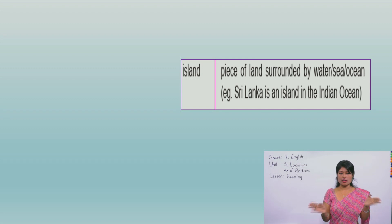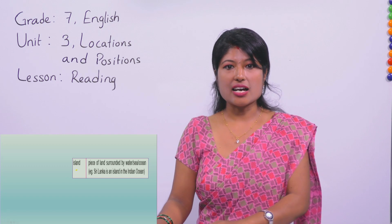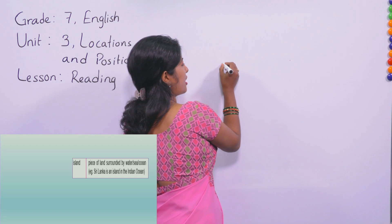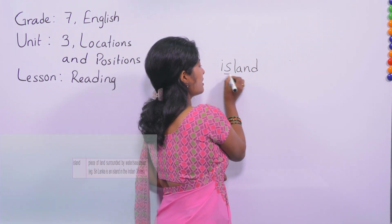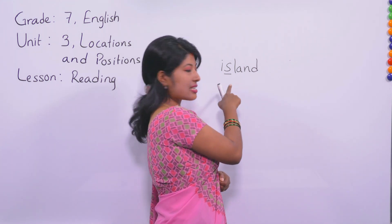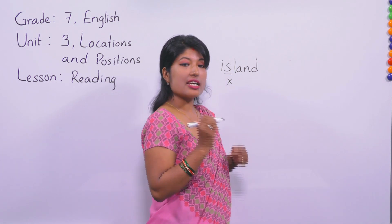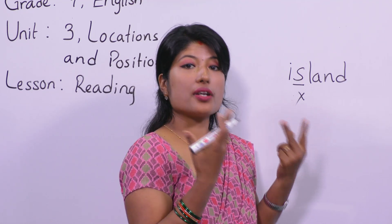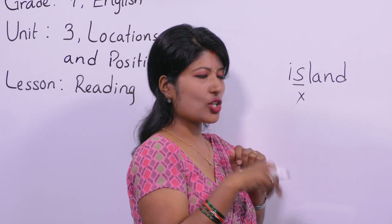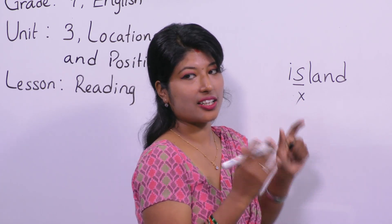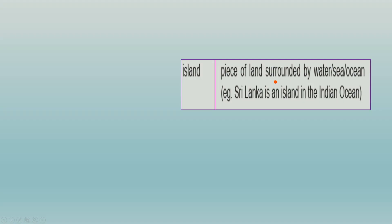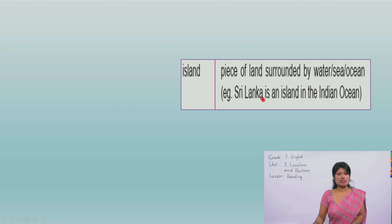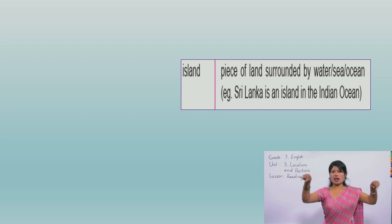From today, pronounce it as 'Island.' The spelling is I-S-L-A-N-D. The 'S' sound is silent - in spelling we write S, but while pronouncing it is silent. So how do you pronounce it? Island. The meaning is: a piece of land surrounded by water - sea, ocean. A piece of land surrounded by water.